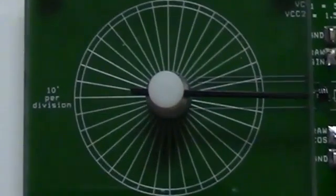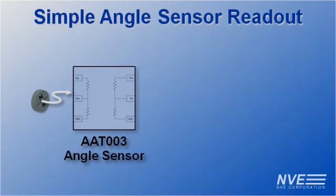We use a radial magnet and there's an AAT angle sensor on this board. The sensor outputs follow the sine and cosine of the magnet angle.